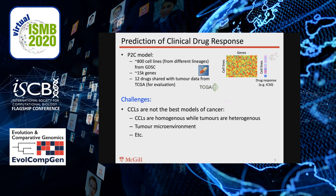In addition, we identified 12 drugs shared between GDSC and TCGA such that they had enough labeled patient data in TCGA for evaluation of different methods. I would like to emphasize that this is a very difficult computational task, much more difficult than predicting the drug response of cancer cell lines using models trained on other cancer cell lines.